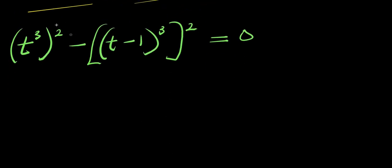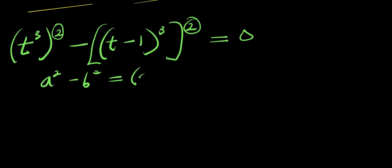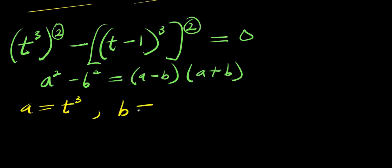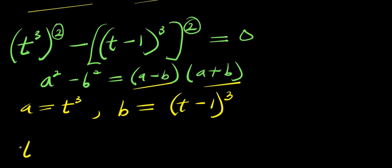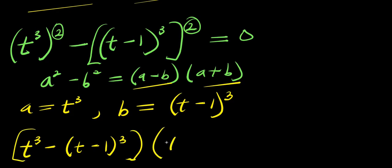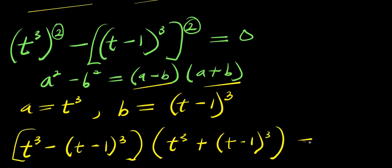So from here we have power 2 here and power 2 here with a minus, so we can make use of difference of two squares: a² minus b² equals (a minus b)(a plus b). Our a equals t³ and b equals (t minus 1)³. So we have [t³ minus (t-1)³] times [t³ plus (t-1)³] equals 0.